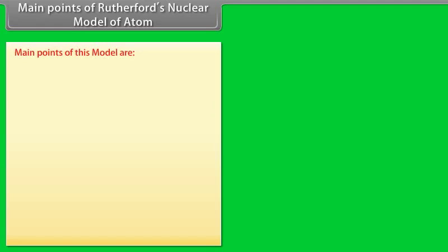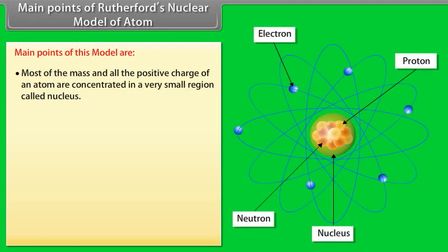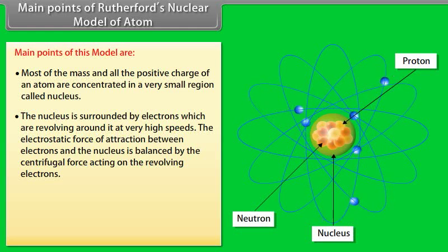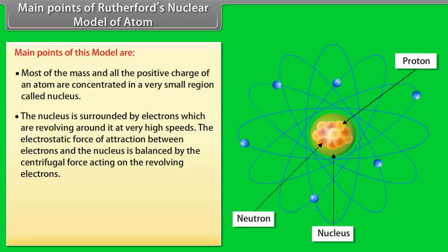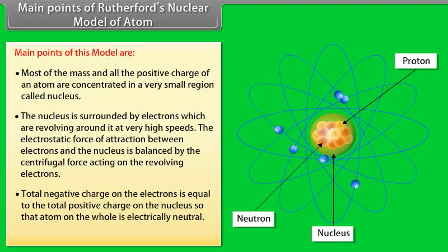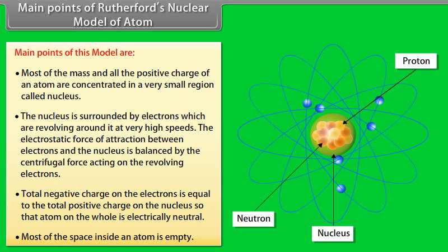Main points of Rutherford's nuclear model: (1) Most of the mass and all the positive charge of an atom are concentrated in a very small region called the nucleus. (2) Electrons revolve around the nucleus at very high speeds; the electrostatic attraction between electrons and nucleus is balanced by the centrifugal force. (3) The total negative charge on electrons equals the total positive charge on the nucleus, so the atom is electrically neutral. (4) Most of the space inside an atom is empty.